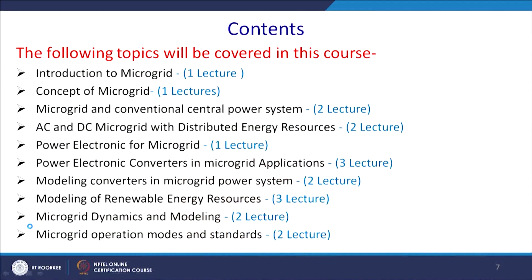These are the course content and overview of the course structure, which will be 8 weeks. First, we are continuing today with the introduction to microgrid. Thereafter, the concept of microgrid — each lecture will have half an hour duration. Then microgrid and conventional central power systems: two lectures. AC-DC microgrid with distributed energy sources: two lectures. Power electronics for AC microgrid: one lecture. Power electronics converters in AC microgrid application: three lectures. We shall discuss different kinds of DC-to-DC converters.